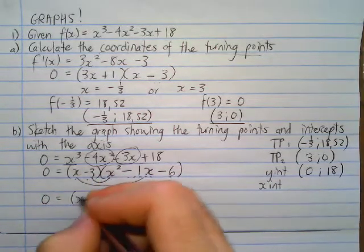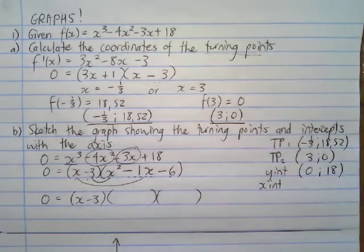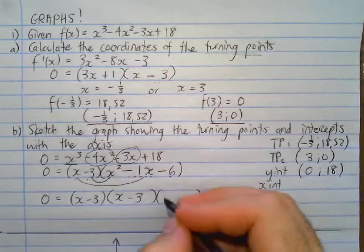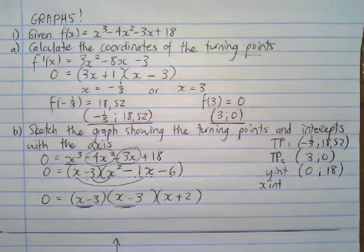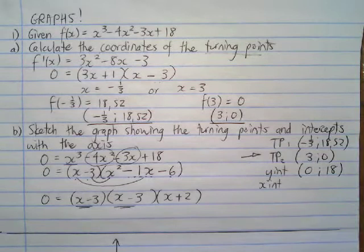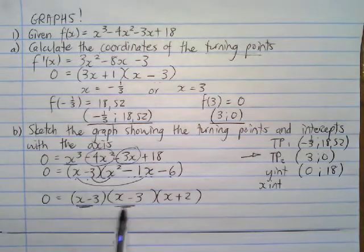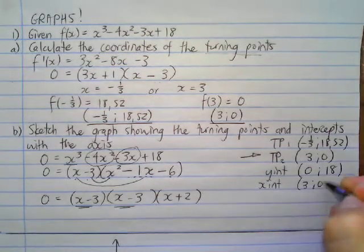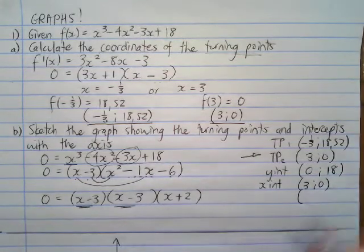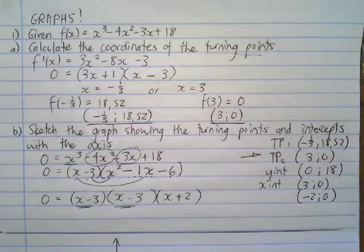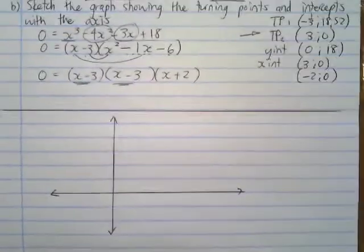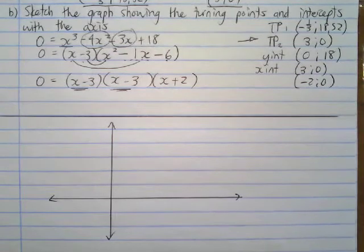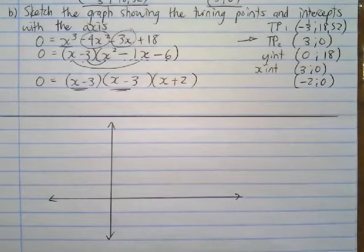The remaining bracket (x squared − x − 6) factorizes further into (x − 3)(x + 2). It's no surprise that (x − 3) appears twice — whenever a turning point sits on the x-axis, it appears twice when we factorize. So our x-intercepts are (3, 0) and (−2, 0). We now have everything needed to draw the graph — it doesn't have to be perfect, as long as all turning points and intercepts are labeled.